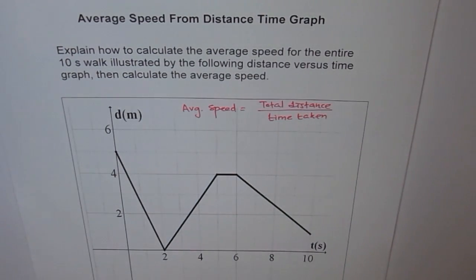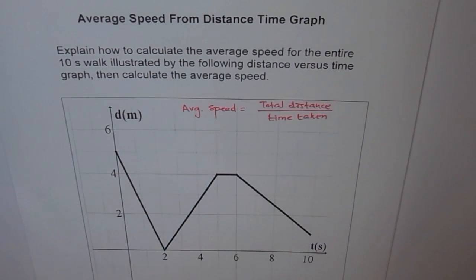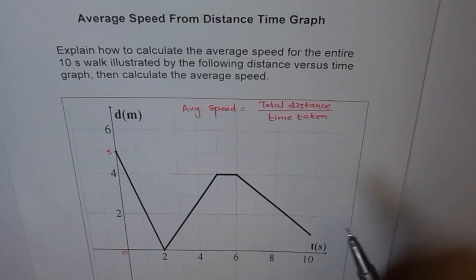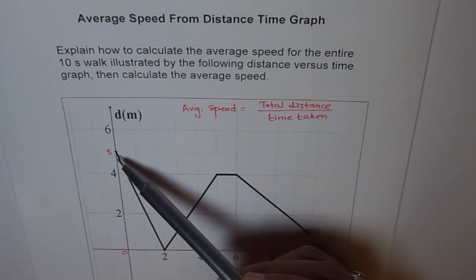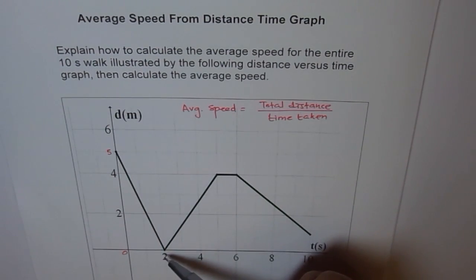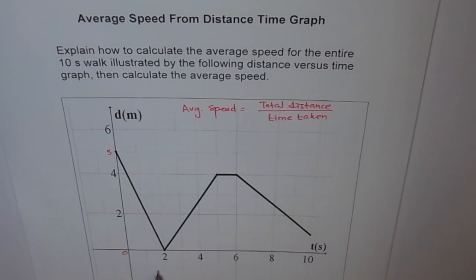We know the time taken is 10 seconds, but how much is the distance? That's the big question. Many students get it wrong. At time 0, the starting distance is 5 — the body is 5 units away from the reference point. In 2 seconds it comes back to the origin, so the distance covered in the first 2 seconds is 5 meters.